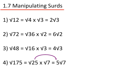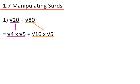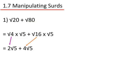Let's see some more difficult examples. Root 20 plus root 18. I need to find the largest square number that goes into both of these, which is root 4 times root 5, plus root 16 times root 5. The square root of 4 is 2, giving me 2 root 5. The square root of 16 is 4, giving me 4 root 5. 2 root 5 add 4 root 5 gives me 6 root 5.